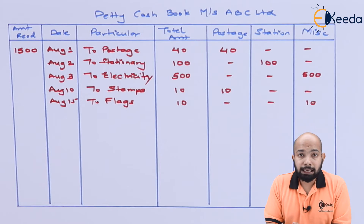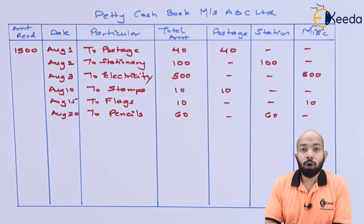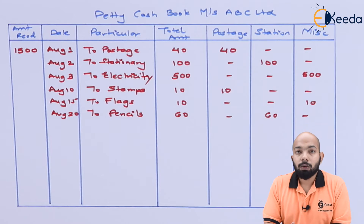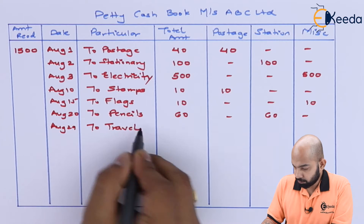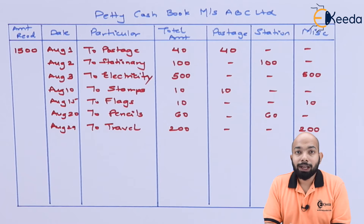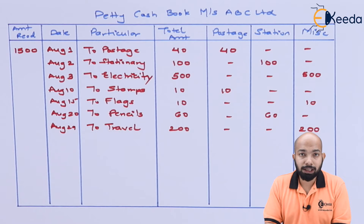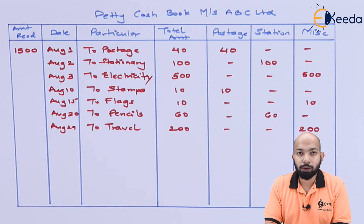Continuing: 15th August — flags purchased for rupees 10, recorded under miscellaneous; 20th August — pencils purchase for rupees 20, recorded under stationery; 29th August — travel expenses of rupees 200, recorded under miscellaneous. Now let's total up the left-hand side (amount received) and the right-hand side (total expenses) to figure out the remaining balance or any overspend.